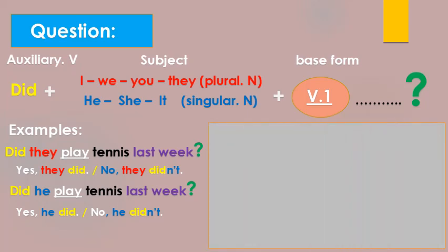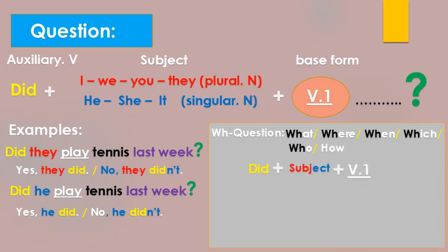Now let's move to the wh-question by using what, where, when, which, who and how. So here we have the same form: did then subject then verb 1.